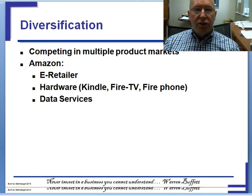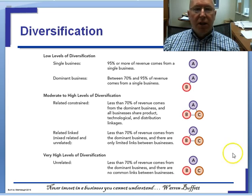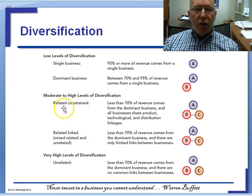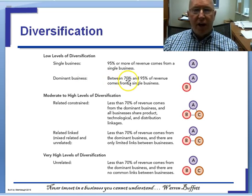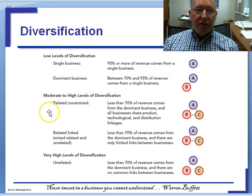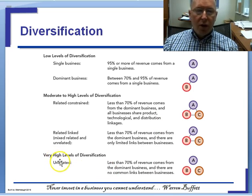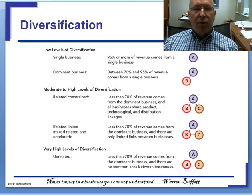Off of this chart, I told you do not worry about 'related constrained' or 'linked.' The three levels of diversification I want you to understand are: dominant business, defined as 70% or more of revenue from a single business; related diversification, which we'll talk about more later; and unrelated diversification, where there are no common links between businesses.